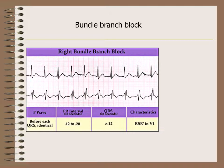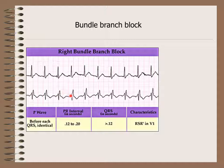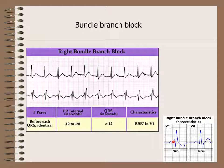Then we come to bundle branch block. The first type is right bundle branch block. In this example, the heart rate is above 60 beats per minute — 300 divided by 3 equals 100 beats per minute, so there is no bradycardia. The PR interval is less than one big square, so it is normal. The QRS duration is more than three small squares, indicating some kind of bundle branch block. We identify the right bundle branch block by an M pattern — the RSR pattern — in V1, and a wide S wave in V6.